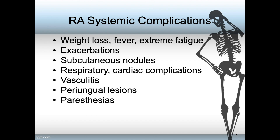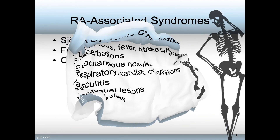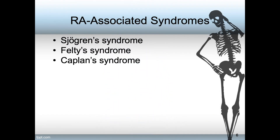In addition, RA is associated with such syndromes as Sjogren's syndrome, which is manifested by dry eyes and dry mouth; Felty's syndrome, in which the RA sufferer has enlargement of the spleen and too few neutrophils in the blood; and Kaplan's syndrome, a type of pneumoconiosis in which interpulmonary nodules appear on chest x-rays.